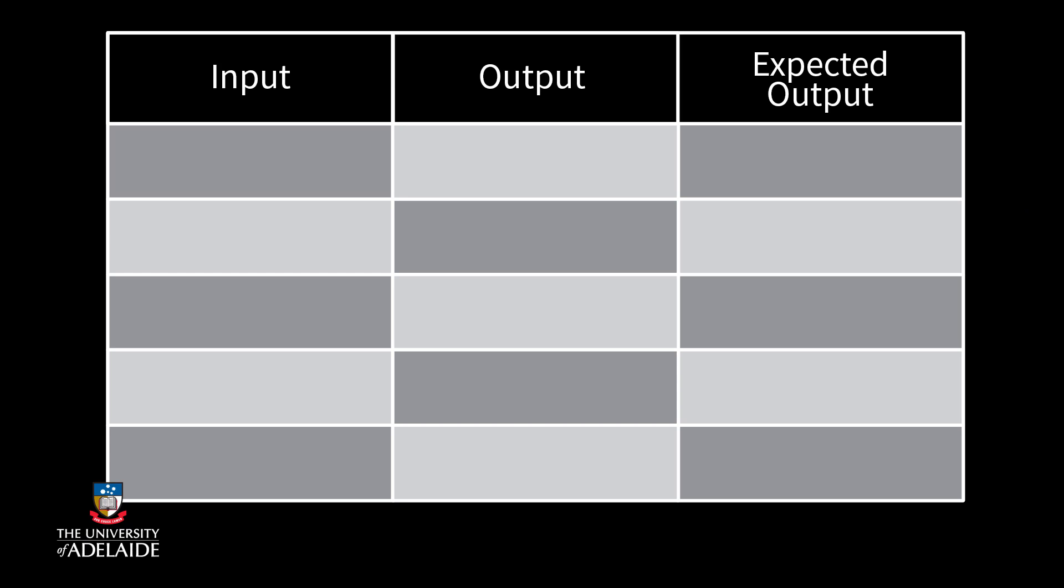Let's consider an example where we have a program that when given a number will add 1 to that number. If this program was run with an input value of 2 then we would expect an output of 3. If we received a different output then we know it is not working as intended.